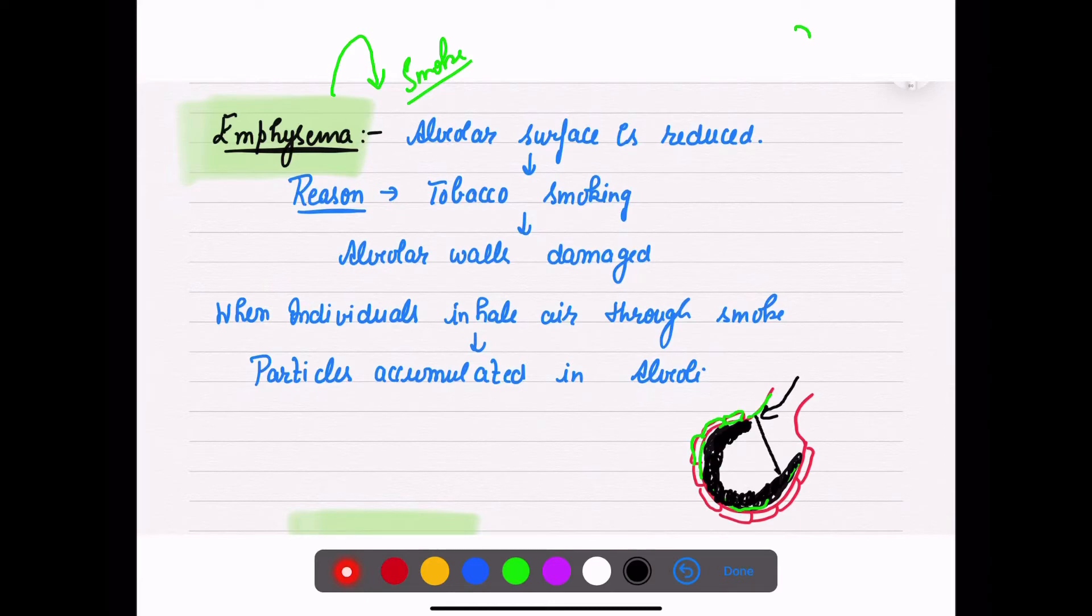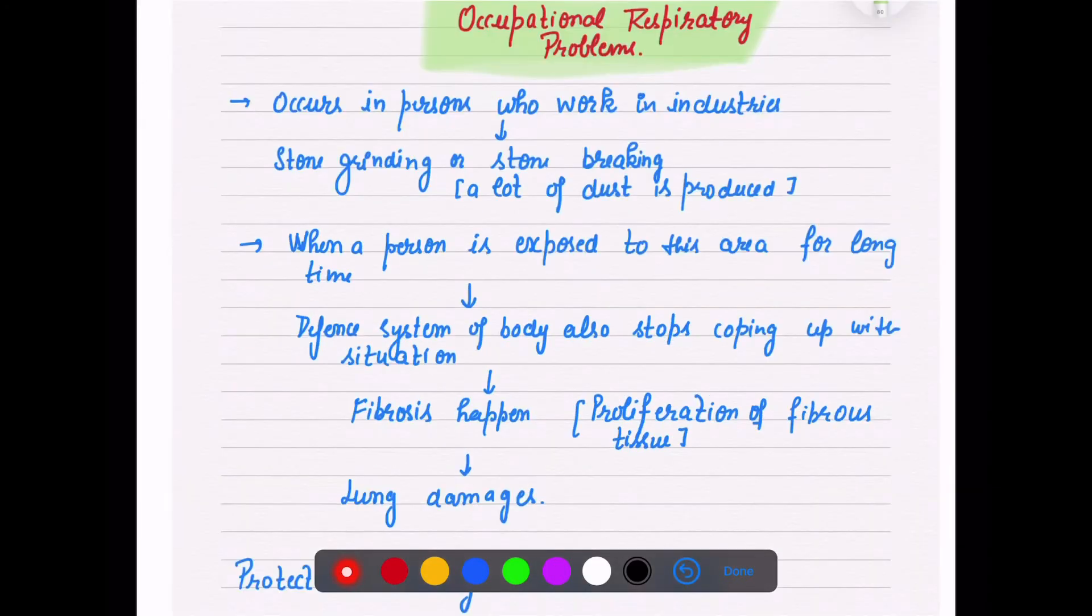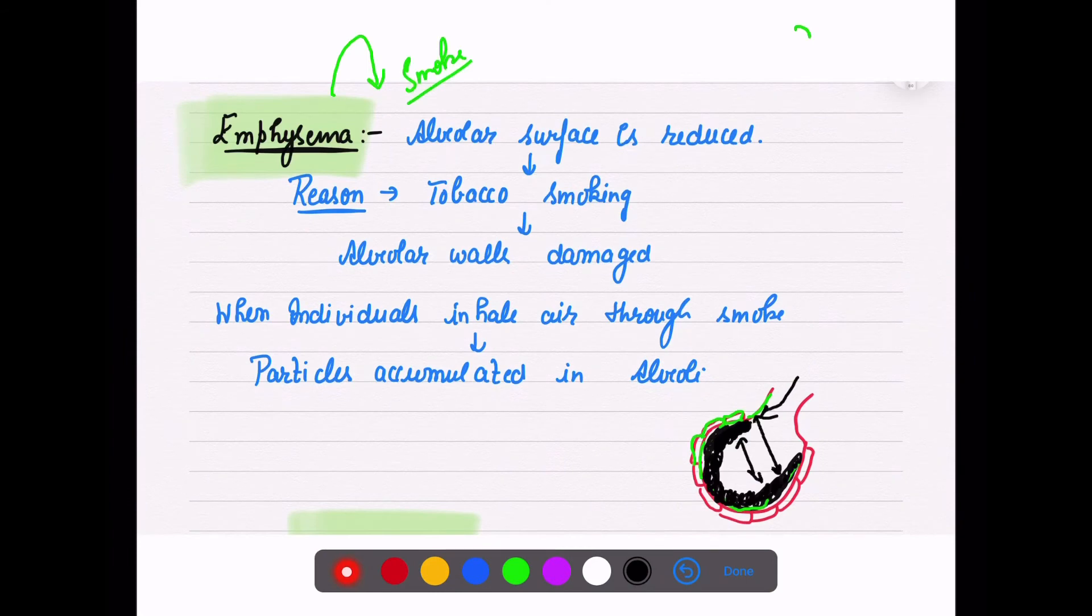As you can see, the area which was so much is now reduced to this much only. The inner area of alveoli, through which gaseous exchange was happening, gets reduced. So alveolar surface is very reduced during tobacco smoking.